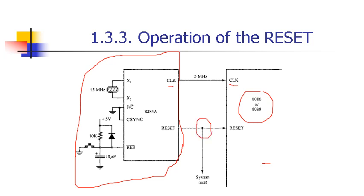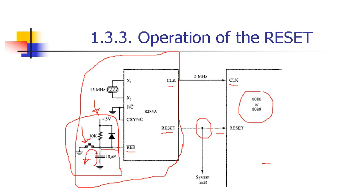Here is the circuit to reset your system. When you first power up the system, the capacitor is fully discharged and a low signal of at least 4 clock cycles is provided at RES bar, which makes the reset high going to the processor so it starts correctly. If you need to reset the system manually, you press the push button; the capacitor discharges through ground, again producing a low signal at RES bar which goes high internally and resets the processor.